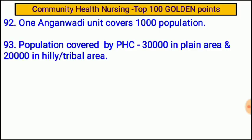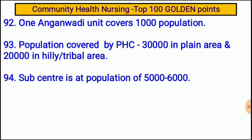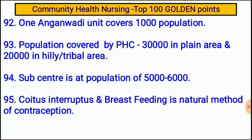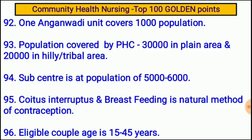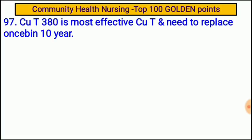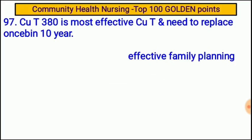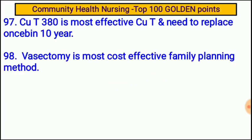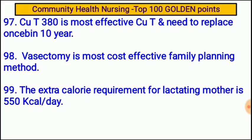Population covered by PHC is 30,000 in plain areas and 20,000 in hilly/tribal areas. Sub-center covers a population of 5,000 to 6,000. Coitus interruptus and breastfeeding are natural methods of contraception. Eligible couple age is 15 to 45 years. Copper-T 380 is the most effective copper-T and needs to be replaced once in 10 years. Vasectomy is the most cost-effective family planning method. The extra calorie requirement for a lactating mother is 550 kilocalories per day.